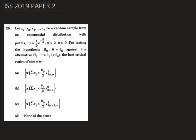Hello, today we are going to solve question number 20 from ISS 2019 Paper 2. In this question, we are given that x1, x2, x3, ..., xn is a random sample from an exponential distribution with parameter 1 by theta.